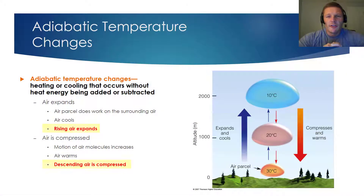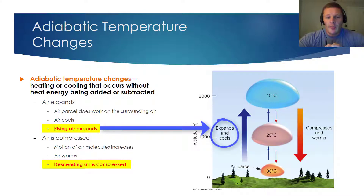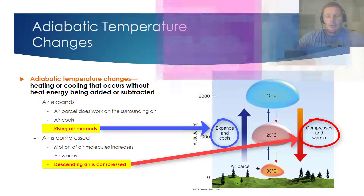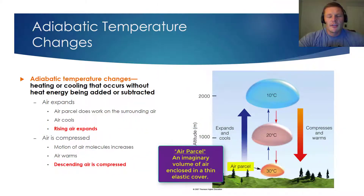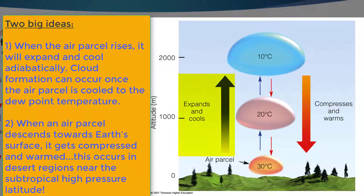Rising air will expand, and descending air will be compressed. The reason that occurs is because as you go higher into our atmosphere, the atmospheric pressure will decrease. For our considerations, we'll talk about parcels of air — you can imagine a parcel of air as a little bubble of air with an imaginary lining containing its contents. So if an air parcel rises vertically into our atmosphere, it will expand and cool because atmospheric pressure decreases with increasing altitude. On the other side, if a parcel of air is descending toward Earth's surface, it will warm because atmospheric pressure increases as you approach ground level.